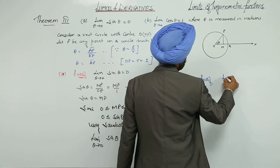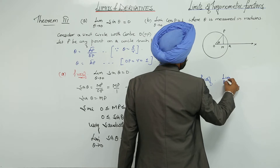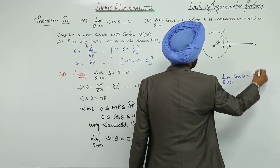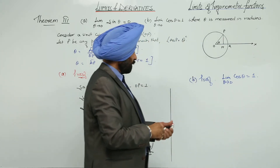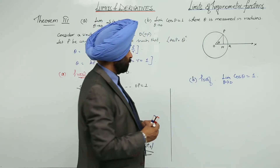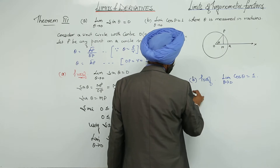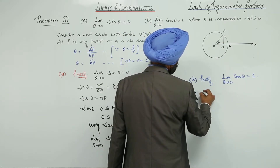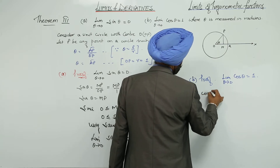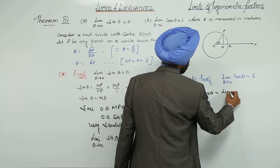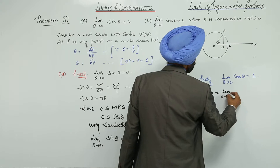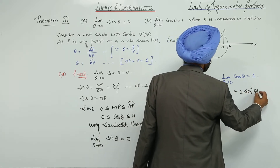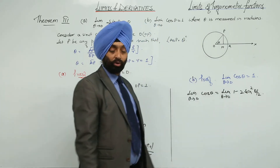Second part proof: limit theta approaches 0, cos theta equals 1. The formula we are going to use is: limit theta approaches 0, cos theta equals limit theta approaches 0, 1 minus 2 sin squared (theta over 2), using the double angle formula for cos theta.